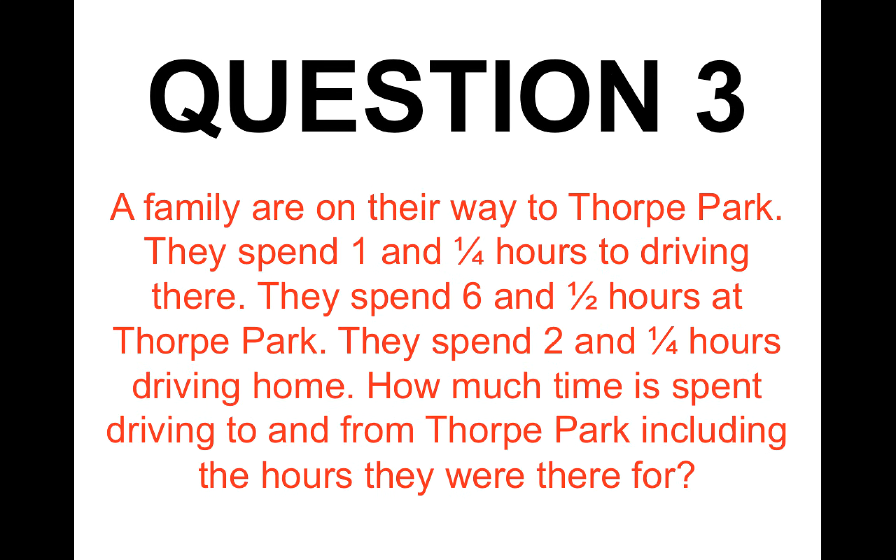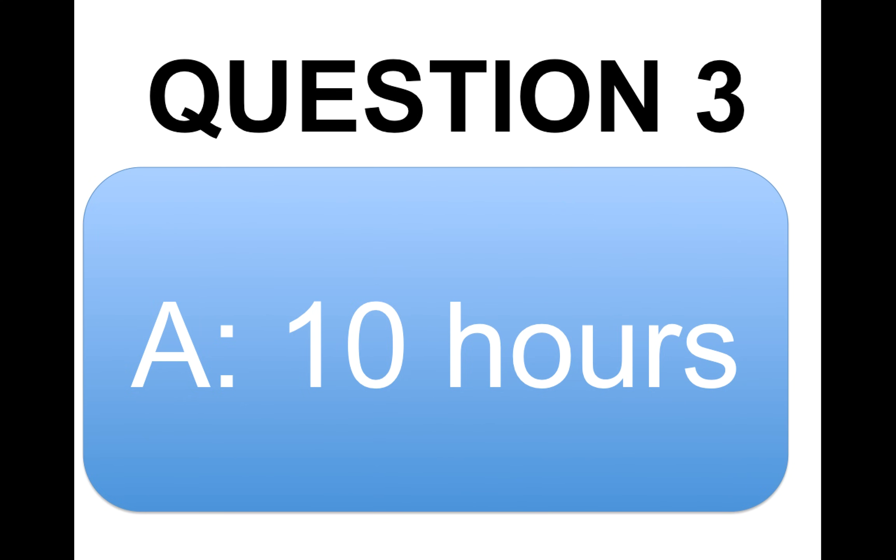Question number three. The family were on their way to Thorpe Park. So they spent one and a quarter hours driving there. They spent six and a half hours at Thorpe Park. They then spent two and a quarter driving back. How much time in total is spent driving to and from the park including the hours they were there for? And the answer is 10. So hopefully you got that correct. 10 hours.